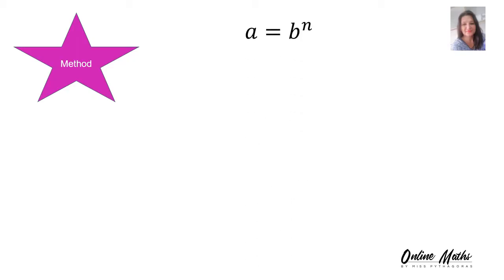I'm going to explain the method you can use to convert an exponential equation into a logarithmic equation and to solve the log. You write log, and then the base of the exponent will also be the base of the logarithm. The number on its own will stand with the logarithm, and the exponent will become the subject of the formula.